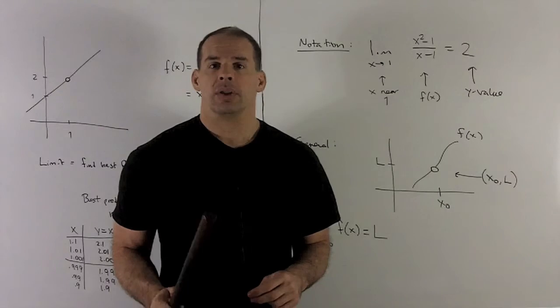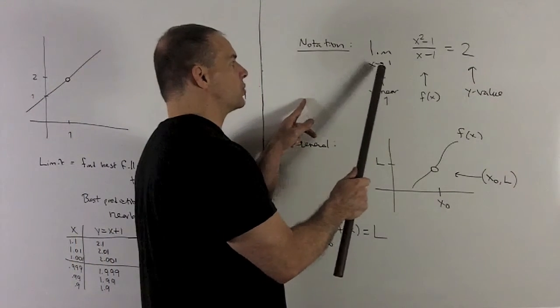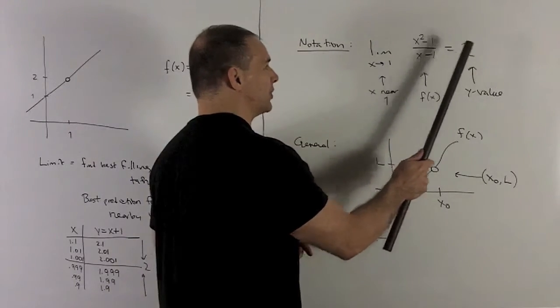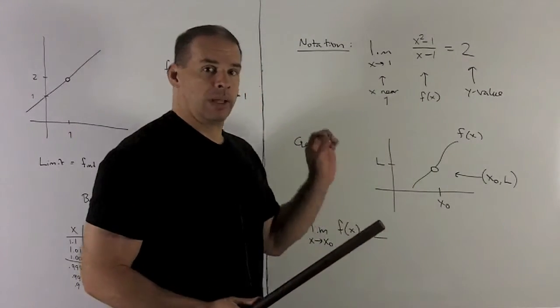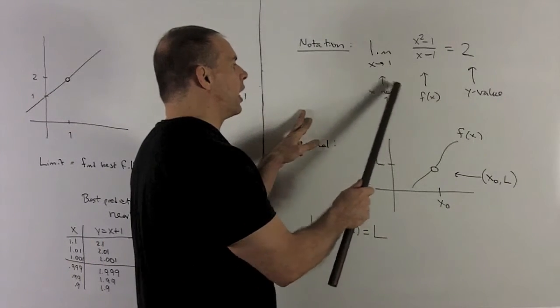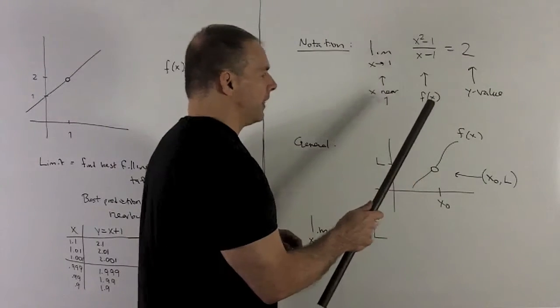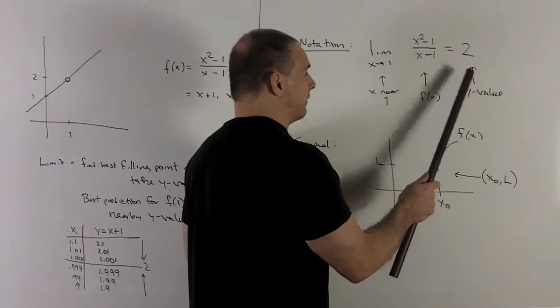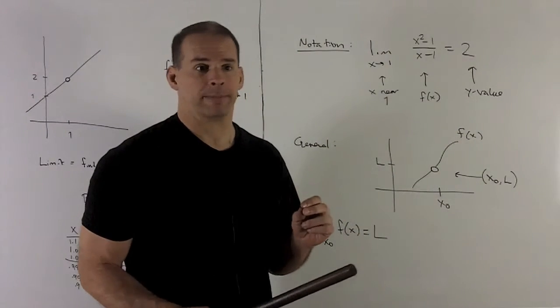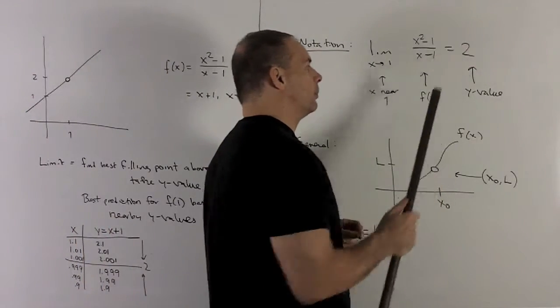Let's take a look at notation. The way we write this down is going to be the limit as x goes to 1, (x² - 1)/(x - 1) is equal to 2. Each piece of this, this x going to 1, we only care about the x that are very close to 1. We're going to have our function in here. And then what comes out is going to be a y value. So this is going to be the y value of our best fitting point. In this case, it was 1 comma 2. So I pulled the 2 off and put it in there.